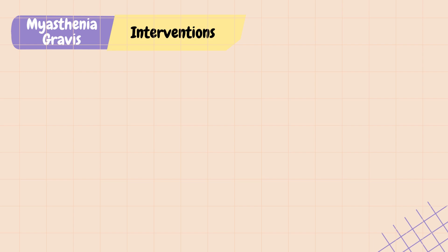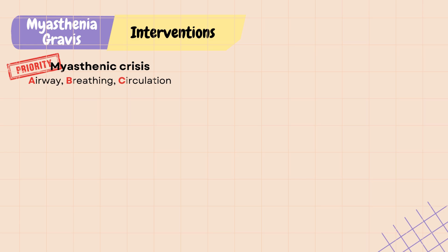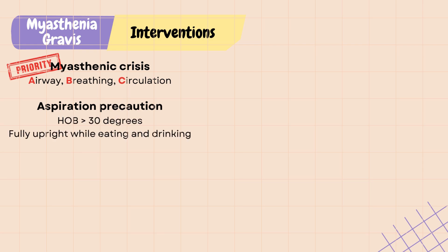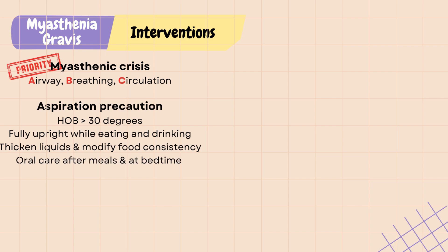Respiratory distress or myasthenic crisis is always the priority. Follow your ABCs: airway, breathing, and circulation. Initiate aspiration precautions due to weakened neck and esophageal muscles. Keep the head of the bed above 30 degrees and at a fully upright position while eating and drinking. Thicken liquids and modify food consistency as needed. Provide oral care after each meal and before bedtime. Have suction set up at bedside. Implement safety and fall precautions due to muscle weakness and changes in vision.